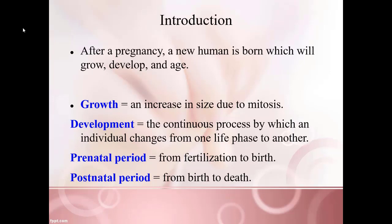There are some terms you should be familiar with. The first is growth — an increase in size due to mitosis. This is how we go from one cell to two, two to four, then eight, and so on. Next is development, a continuous process as we go through individual changes within our life from one life phase to another. You have the prenatal period, which starts from fertilization up to birth, and the postnatal period, which is from birth until death.